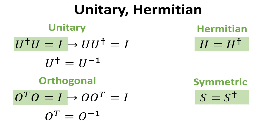Two commonly used operators in quantum mechanics are the unitary and the Hermitian operators, denoted as U and H respectively. An operator whose product with its own adjoint equals the identity operator is called a unitary operator. One can also show that the unitary operator multiplied by its own adjoint will also equal the identity operator. Hence, the adjoint of the unitary operator is the inverse of the unitary operator. An operator whose adjoint is itself is known as a Hermitian, or self-adjoint, operator.